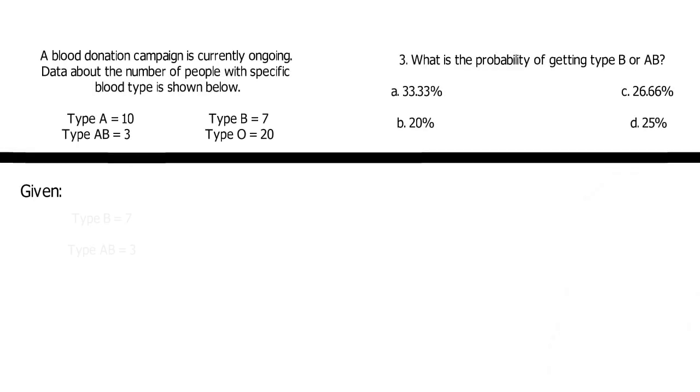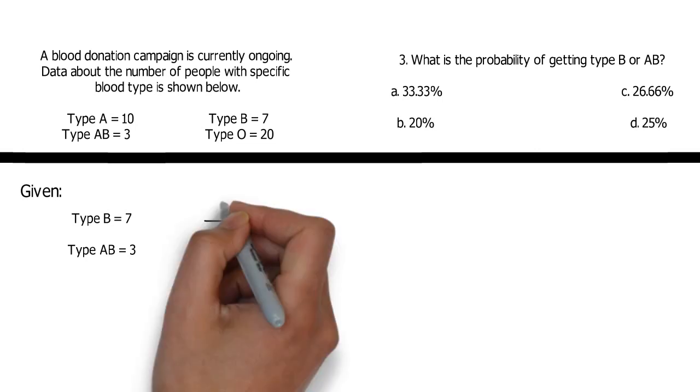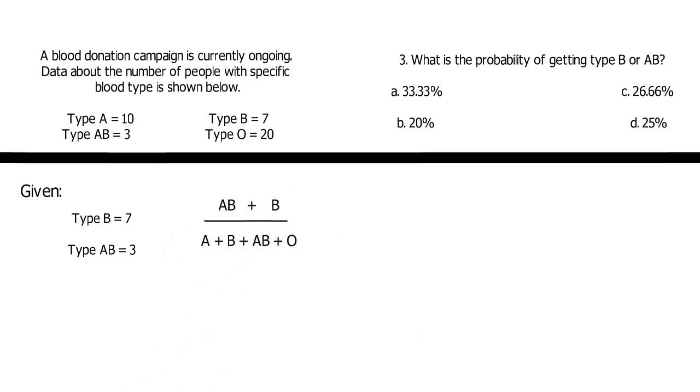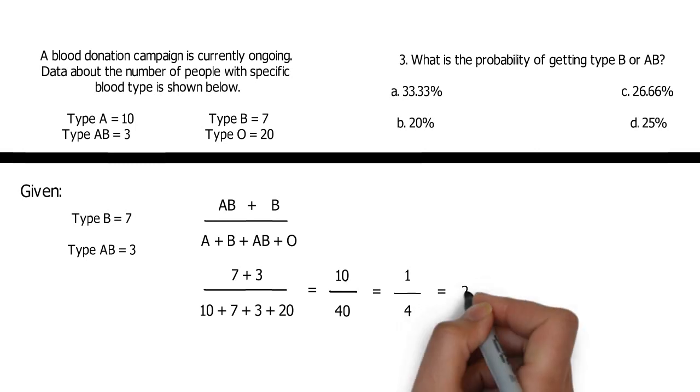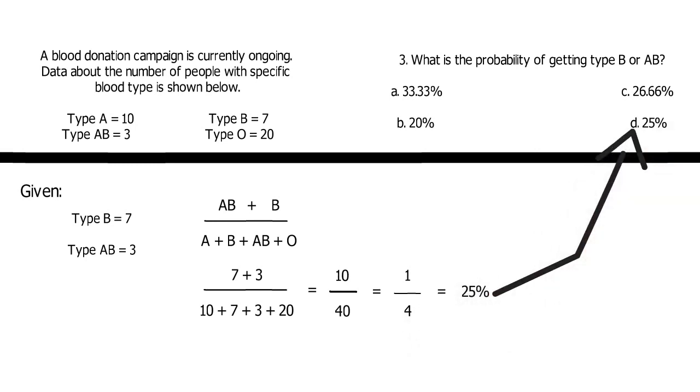Third question is about probability. So simple addition and division are all the steps. Just add the number of people, type AB and B, and divide by the total and convert to percent. 7 plus 3 over 10 plus 7 plus 3 plus 20 is equals to 10 over 40, or 1 fourth, or 25%.